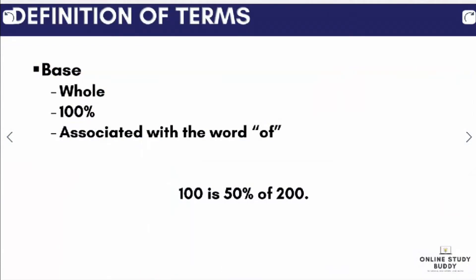The base is the value related to 100%, so that's the whole. It is associated with the word 'of'. So in our example, 100 is 50% of 200 — the word associated with 'of' is 200. So in this example, 200 is our base.